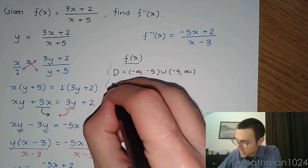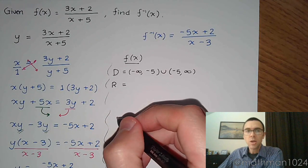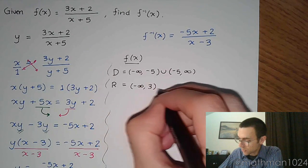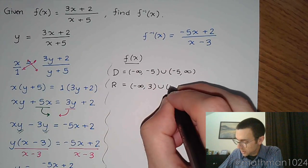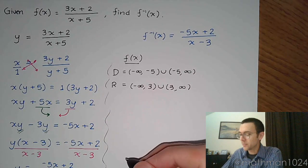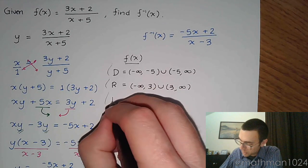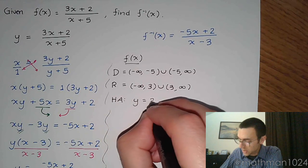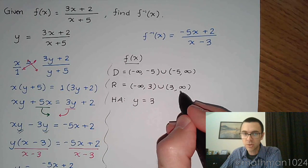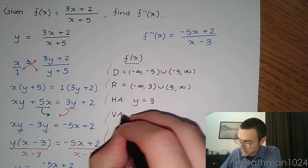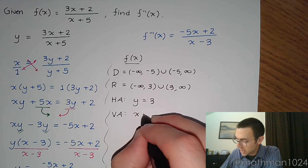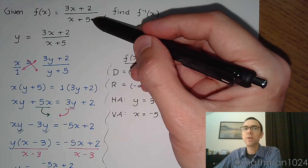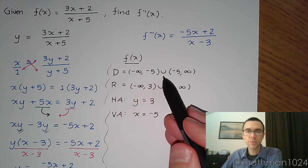And his range, now this is something that we don't really have time to cover in this class, but the range is going to be from negative infinity to 3 union 3 to infinity. Now based on what I've written here, you should be able to figure out that the horizontal asymptote is y = 3. You see that's the guy that's missing in your range. And the vertical asymptote for my function is x = -5, because that is what made the denominator equal to 0, which made the expression undefined.